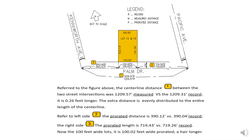This is an example of prorating a street centerline distance. Referring to the top figure, the measured centerline distance from two street intersections was 1,209.57 feet versus the record 1,209.31 feet — it is 0.26 feet longer. The extra distance is evenly distributed to the entire length of the centerline. Referring to the left side of the property, the prorated centerline distance is 390.12 feet versus the record 390.04 feet — it is 0.08 feet longer.